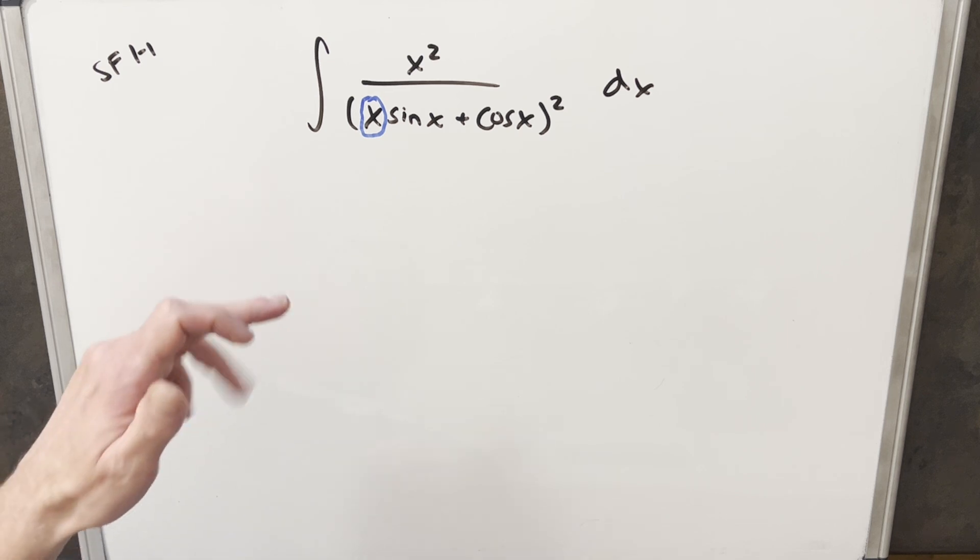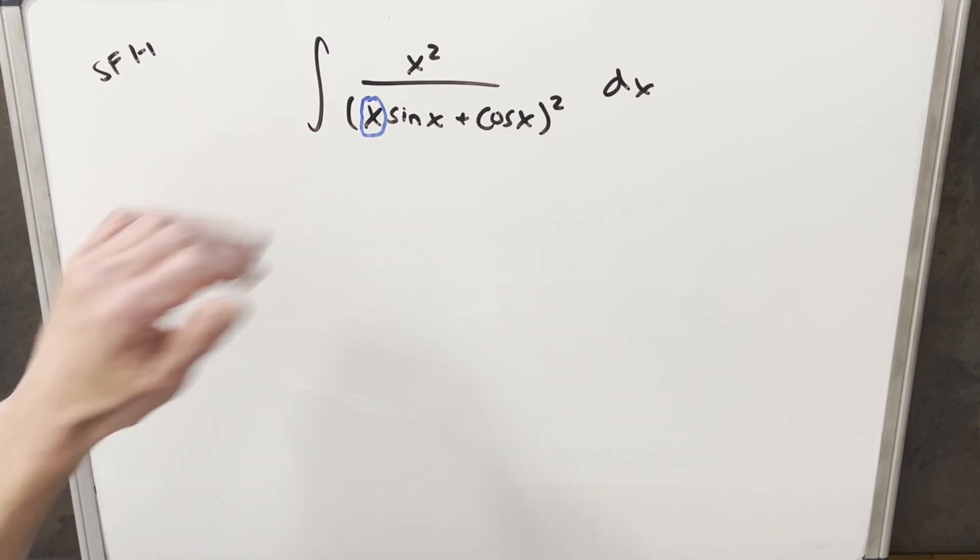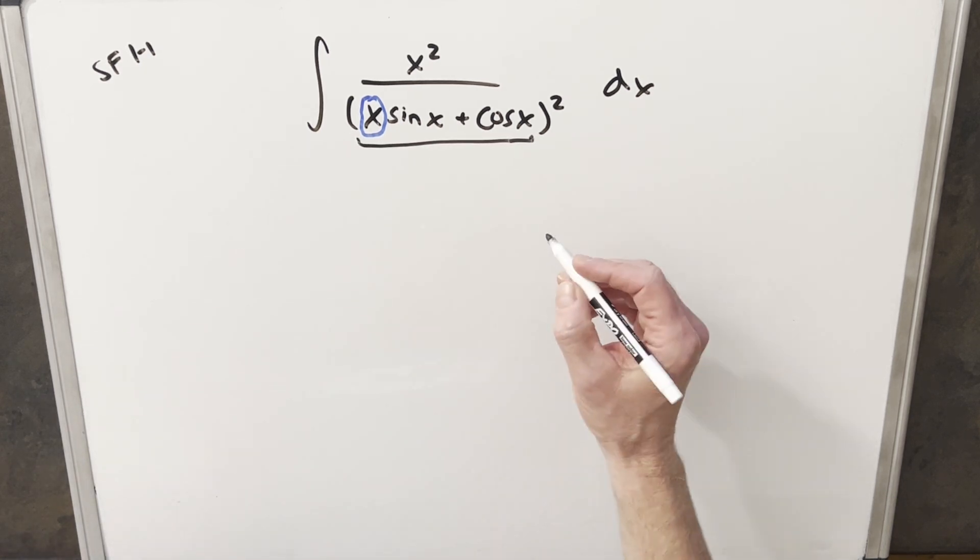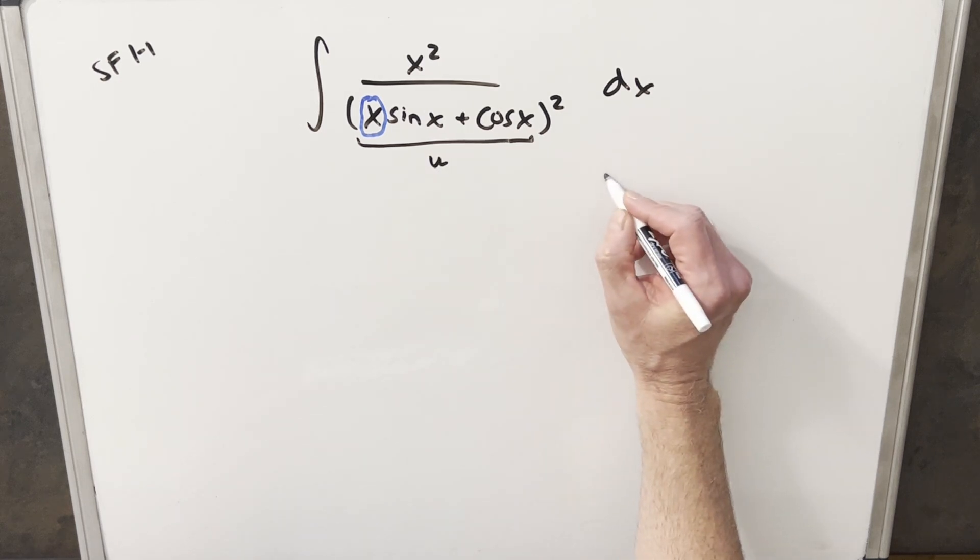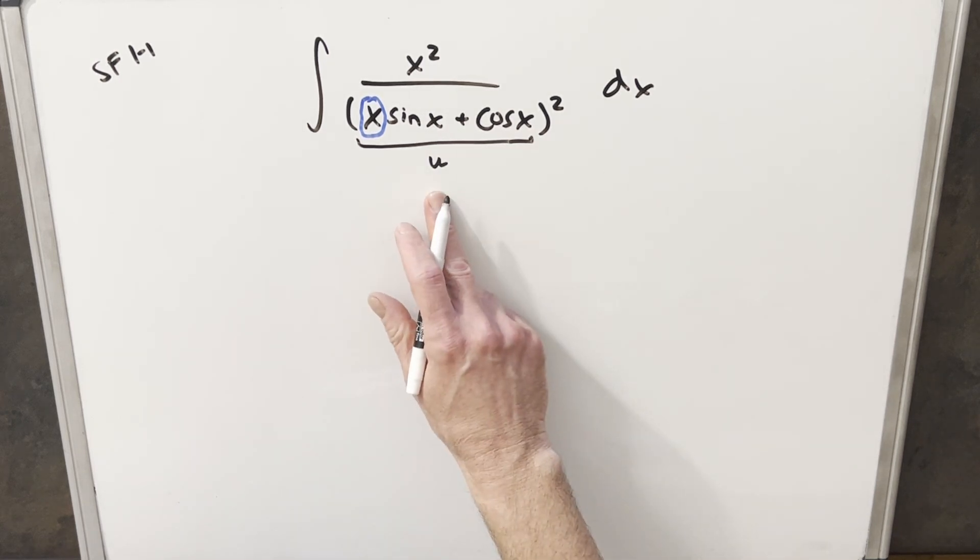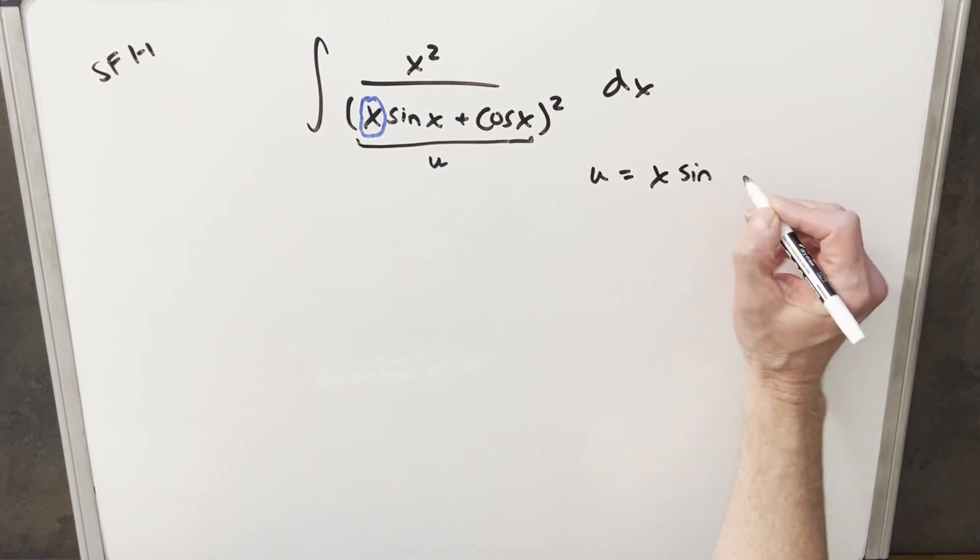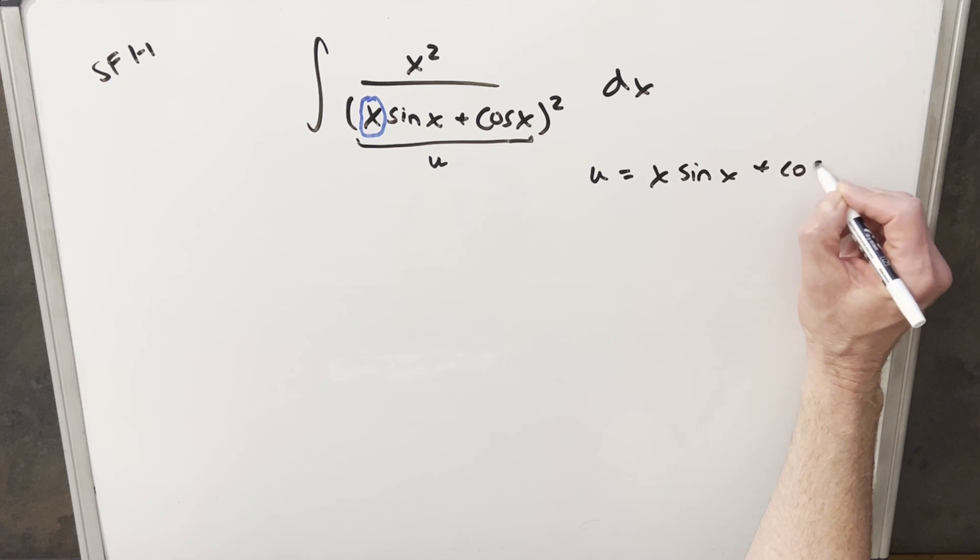One thing I noticed, I just started taking derivatives of different things in different forms. And a lot of the derivatives came up pretty nice. And one of them was just this whole piece in here inside of the square root, which makes me think I want to try a u substitution. Let's see what happens when we take a derivative of u. So we'll try to force a u substitution of x sine x plus cosine x.